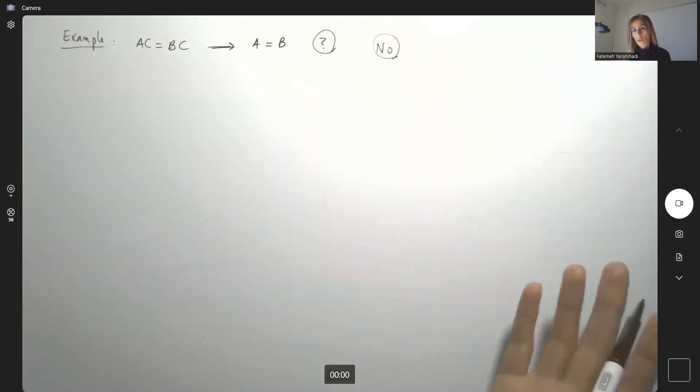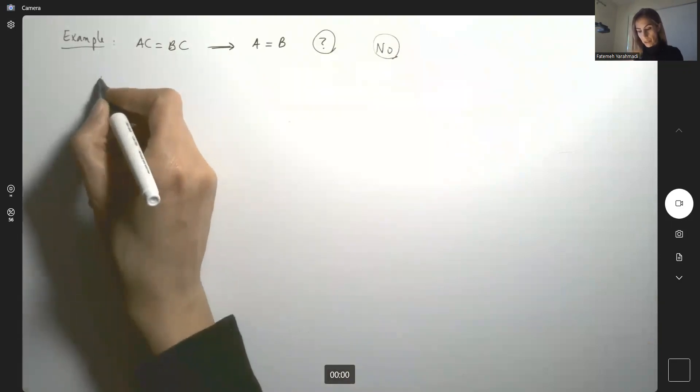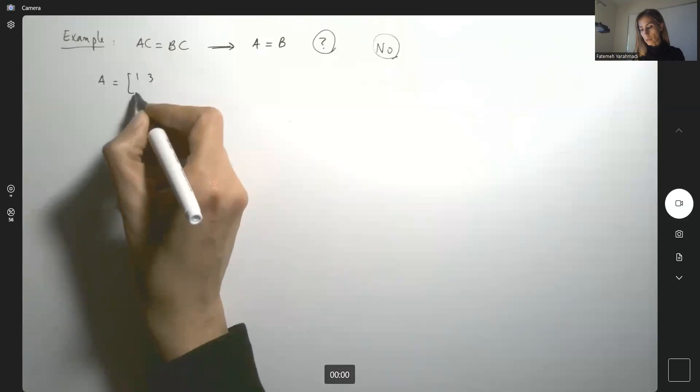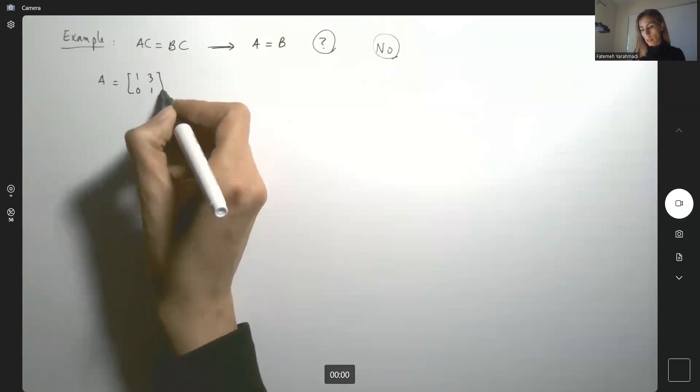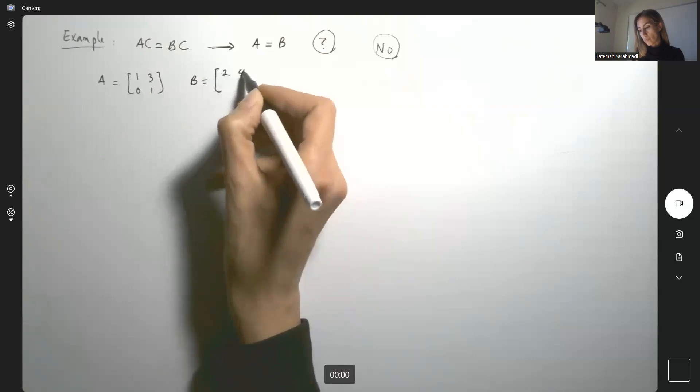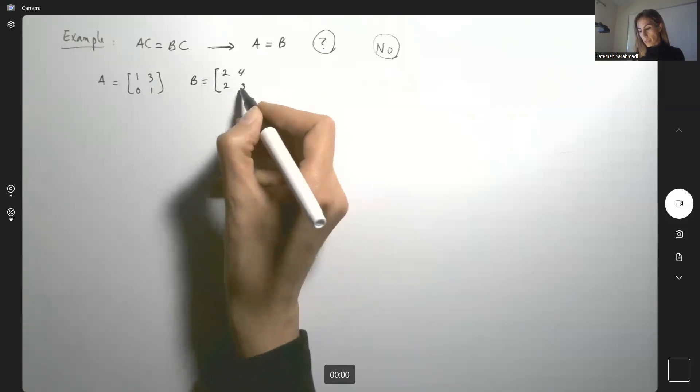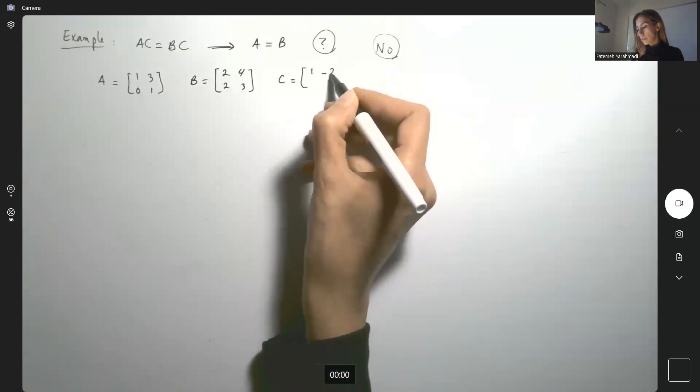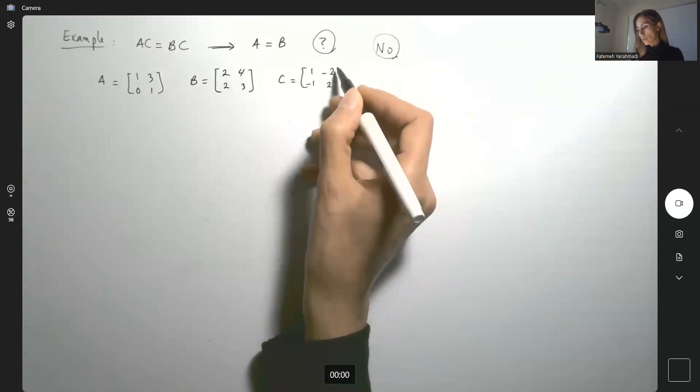So since this is a general question, I want to give you general matrices. Suppose matrix A is equal to 1, 3, 0, 1, and your matrix B is equal to 2, 4, 2, and 3, and matrix C is equal to 1, negative 2, negative 1, and 2.